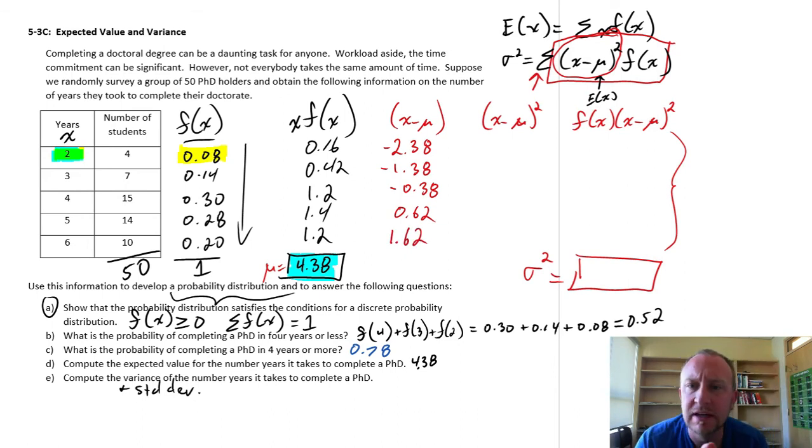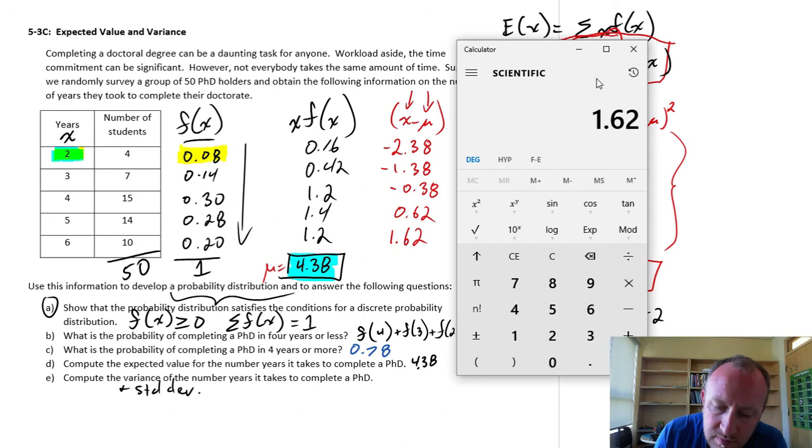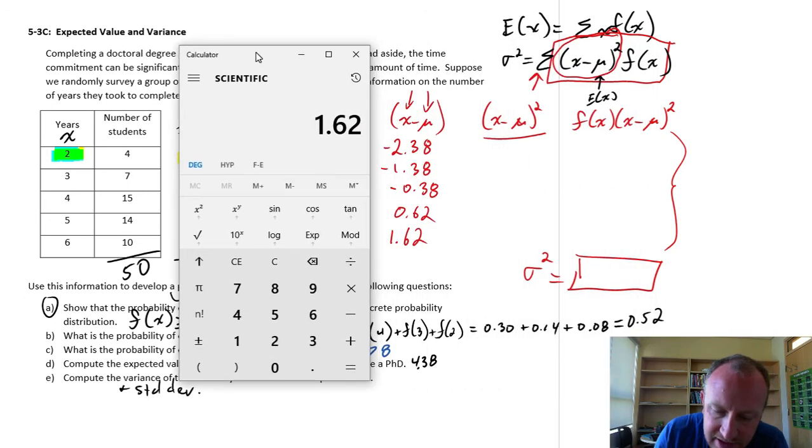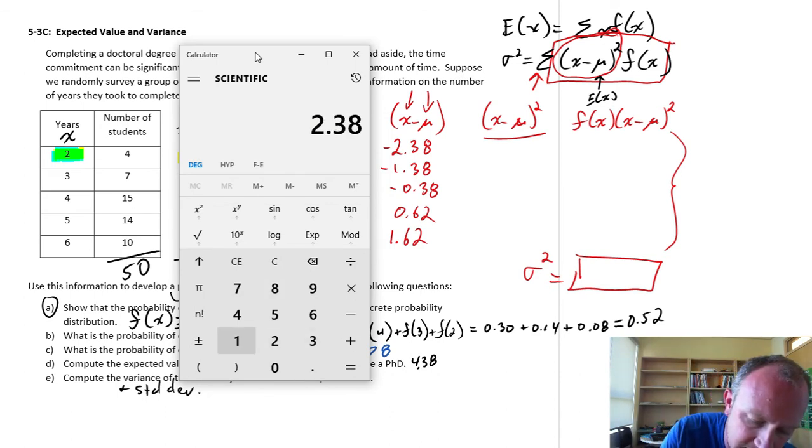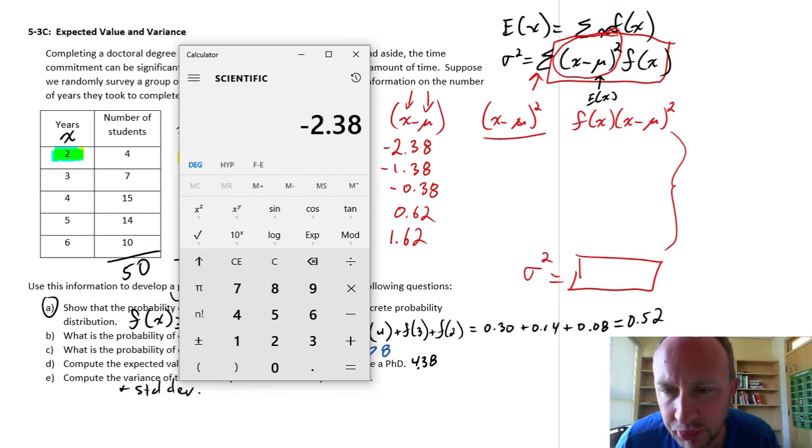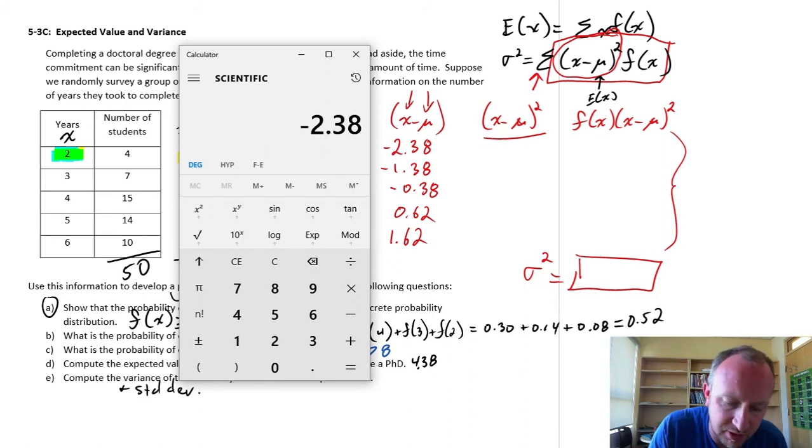Next, I'm looking at 4 years. 4 minus 4.38, negative 0.38. Finally, 5 years, minus 4.38 is 0.62. And the next one is 6, minus 4.38 and 1.62. So now we have all of those differences, sometimes called deviations. They're individual deviations from the mean. We're looking at the deviation between that value of the variable and that variable's mean. Now our next step, we're going to square. So here we're going to square all of those deviations.